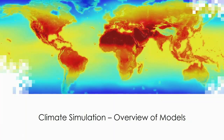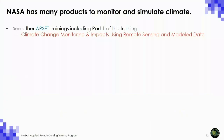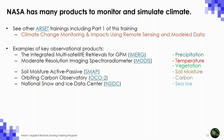Now shifting to climate simulations and how we use models to understand the climate system. NASA has many products to monitor and simulate climate. Key examples include the iMerg precipitation product, MODIS products for temperature and vegetation, SMAP for soil moisture, the Orbiting Carbon Observatory for carbon fluxes, and the National Snow and Ice Data Center for sea ice and cryosphere elements. This is a small sample of a larger set of cutting-edge remote sensing and observational products.